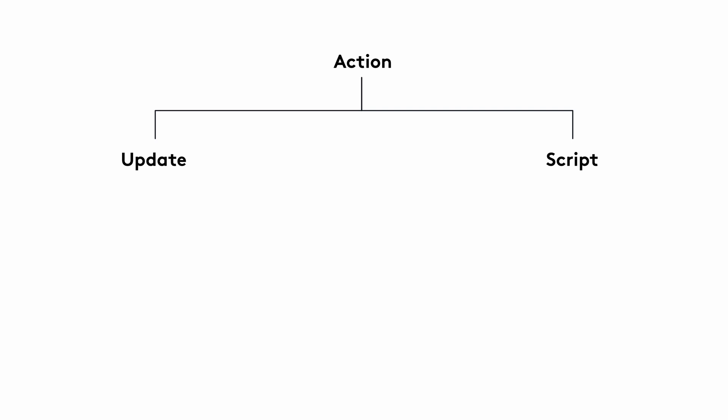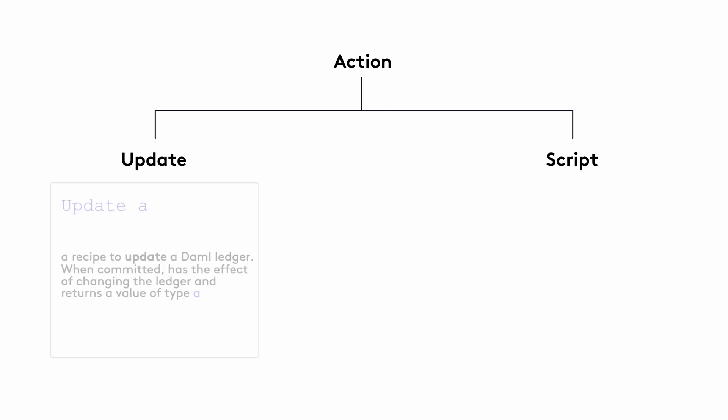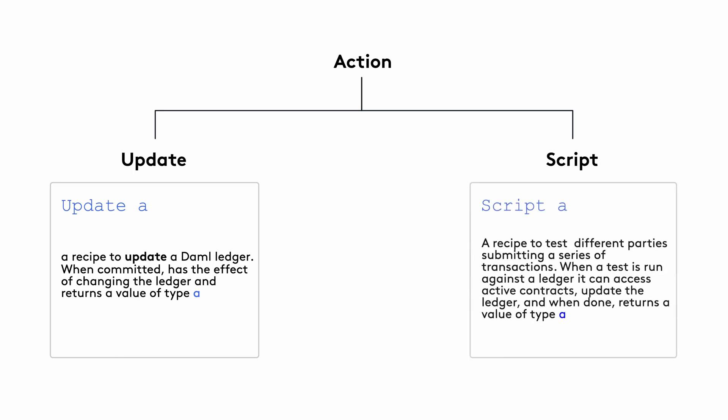Type classes are like an interface for a function that a data type can implement. So `Update A` means a recipe to update the Ledger, which will return a value of type A. In a similar way, `Script A` is a recipe for a test that returns a value of type A. And as we just saw, script is just another Canton Ledger client using the same backend services that would be used by any other external client application.